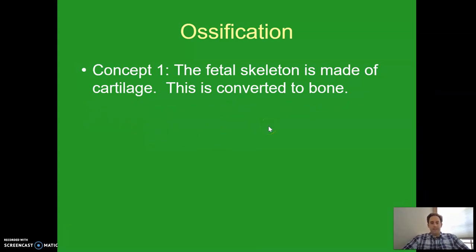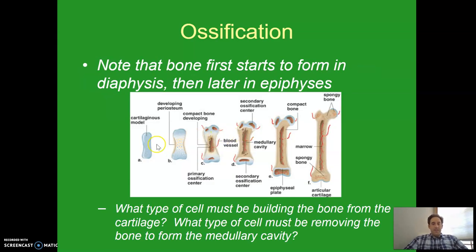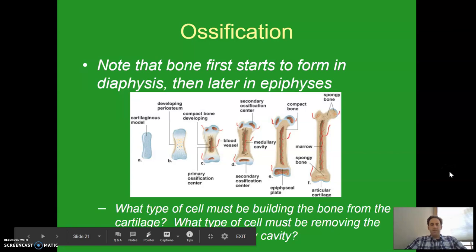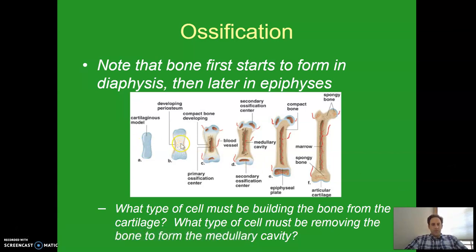Concept one: the fetal skeleton is actually made up of cartilage. We begin our existence with a cartilage skeleton, and then that is slowly converted to bone over time. We start with cartilage, then slowly the diaphysis is converted to bone, then eventually the epiphyses are converted, and along the way we carve out that medullary cavity. The osteoblasts are building bone from cartilage, and the osteoclasts are carving out the medullary cavity and pores for the spongy bone.